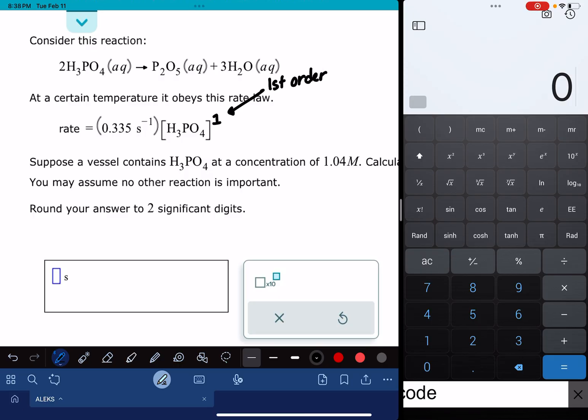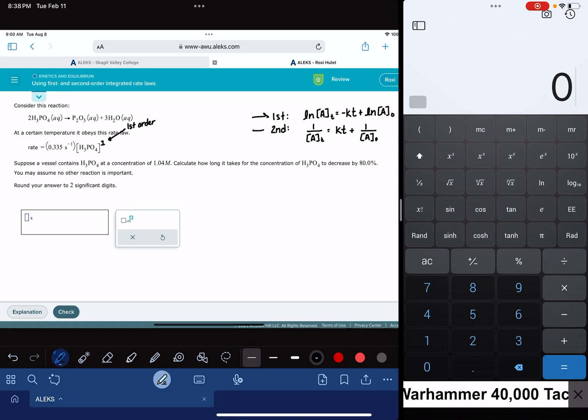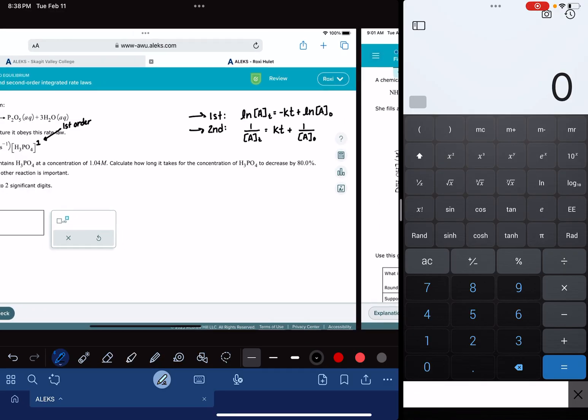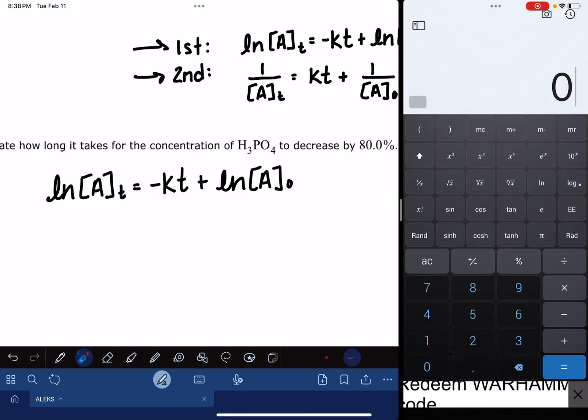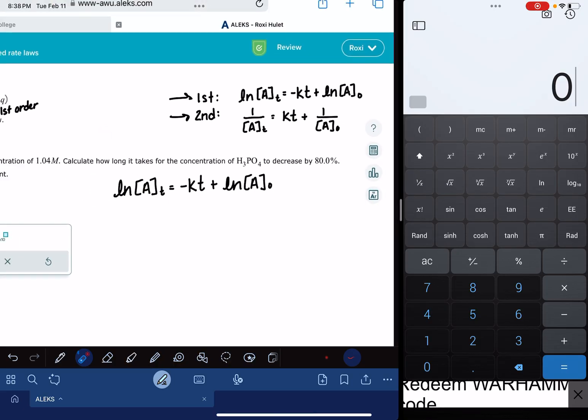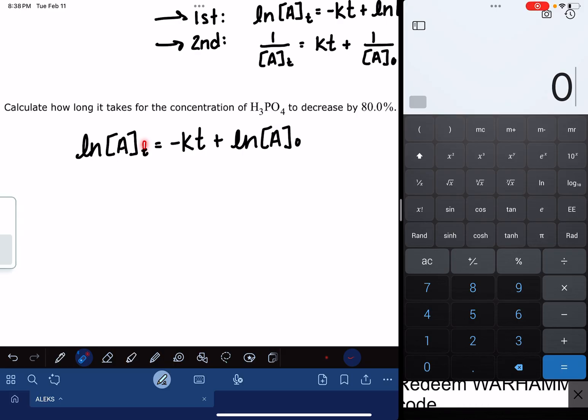So once you have that figured out, by that I mean once you know what your order of reaction is, that's going to tell you which integrated rate law you should use. Since I have a first order reaction, I am using the first order integrated rate law. I'm just going to copy it down here. Now whether you have a first or second order reaction, we have the exact same four variables in both of those equations, so we'll all have the same four variables. The first variable that we have is the concentration of A at time T.